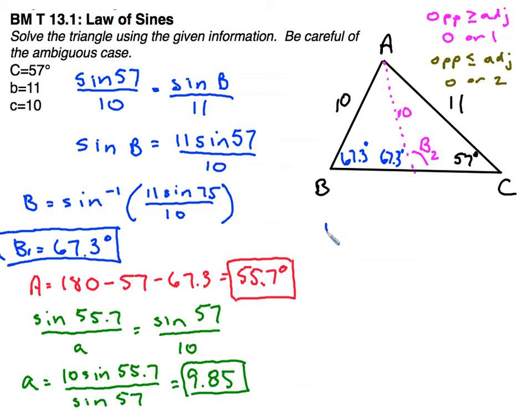So to find B2, I can just subtract 67.3 degrees from 180, and I get B2 equals 112.7 degrees.